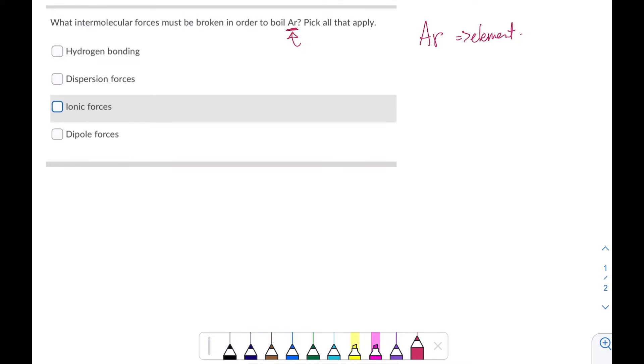Once you decide whether it's ionic or covalent, and you should be able to do that without the Internet, the next thing is to decide if it's polar or nonpolar, if it's covalent. And you can let the Internet help you with that. But be careful. Sometimes Google is wrong.